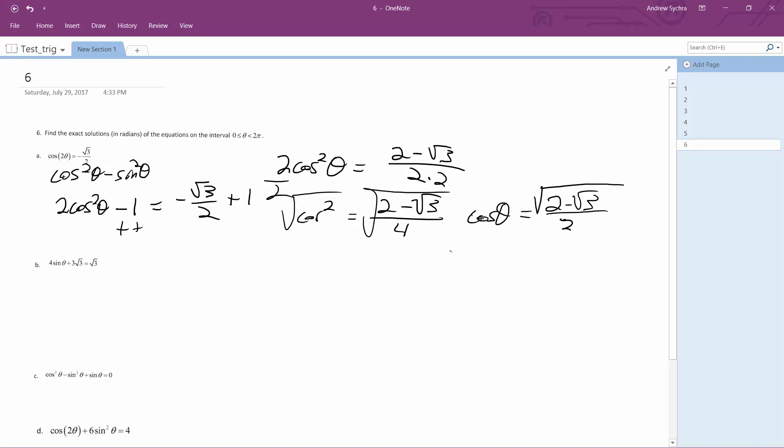So you may be a little confused here, but okay, so theta in this case is going to be equal to arc cosine of square root of 2 minus root 3 over 2, which is 1.3089.